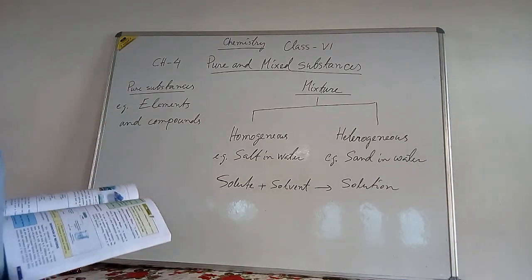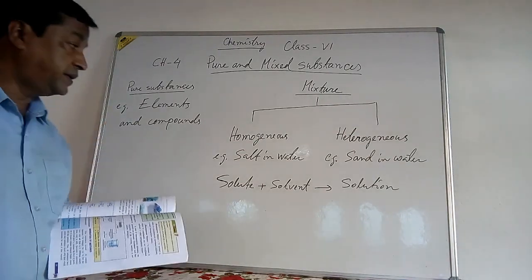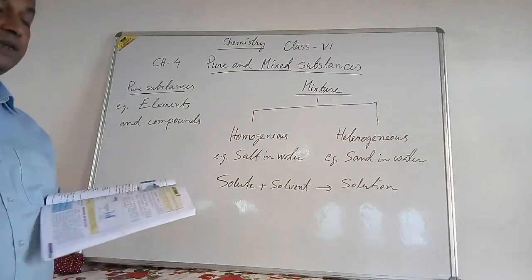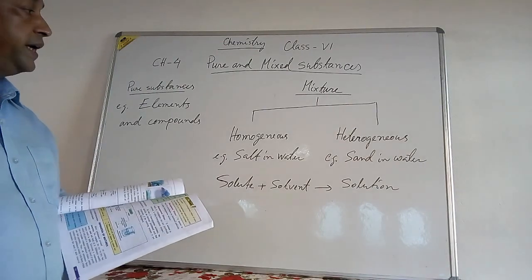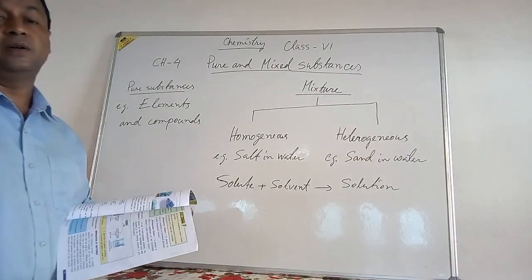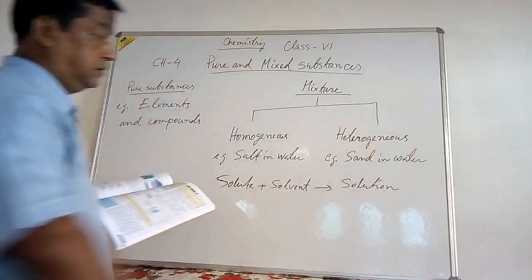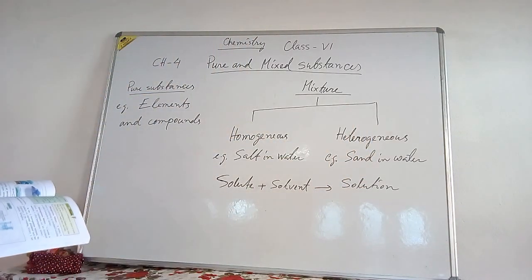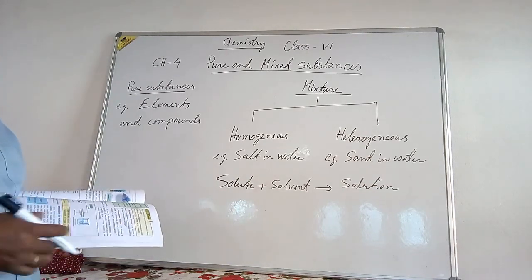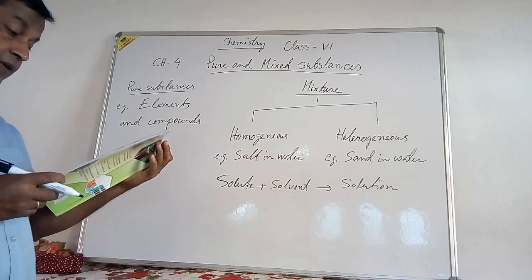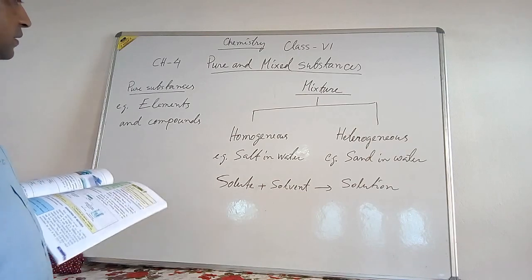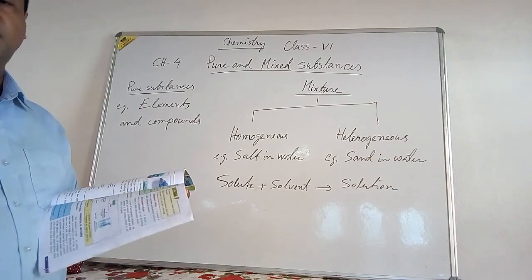In a heterogeneous mixture, the components are not mixed uniformly. For example, if you mix sand in water, you will see that it does not mix uniformly. So these are known as heterogeneous mixtures. You can find many other examples of homogeneous and heterogeneous mixtures in daily life.